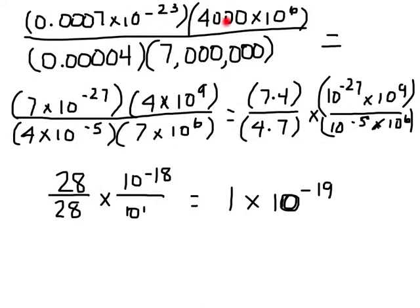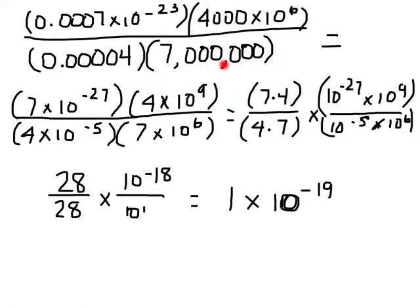Here I'm going to have 4 numbers that I need to get into scientific notation form first. This one becomes 7 times 10 to the negative 27 because I had to move it 4 places to the right. This becomes 4 times 10 to the 9th because I moved it 3 to the left, which added to the 6th. This becomes 4 times 10 to the negative 5th because I moved it 5 times. And this becomes 7 times 10 to the 6th because I had to move the decimal 6 places to the left.